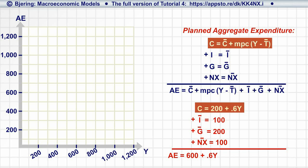Since planned consumption varies with income, we can add the linear consumption function to the graph.